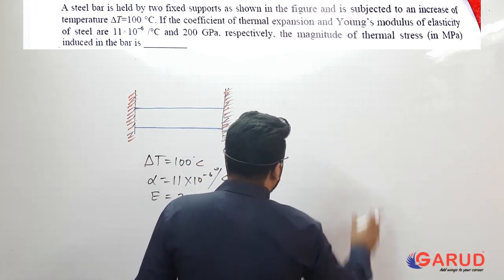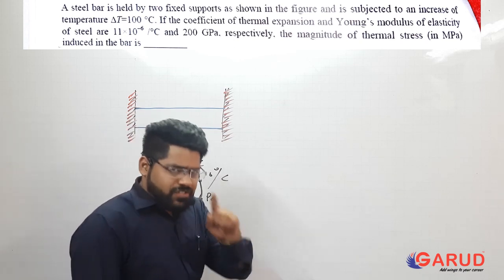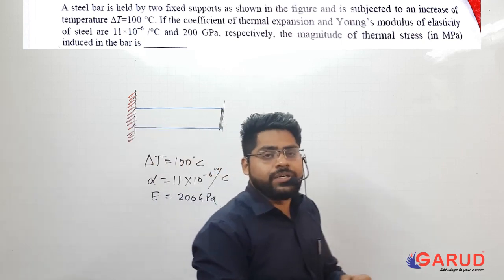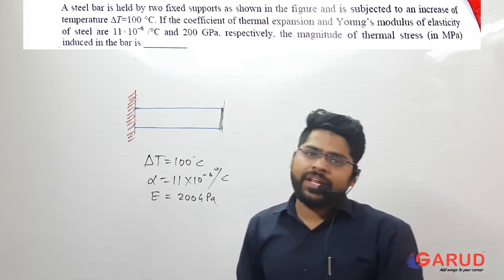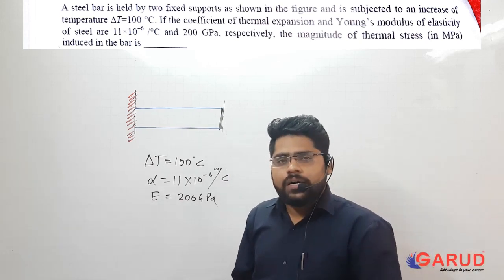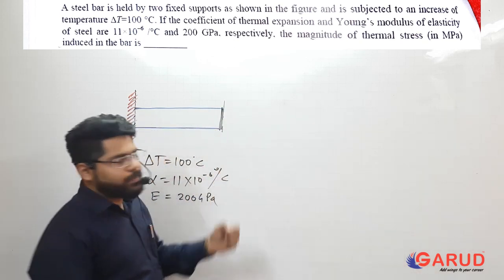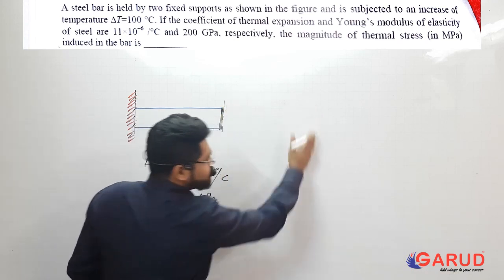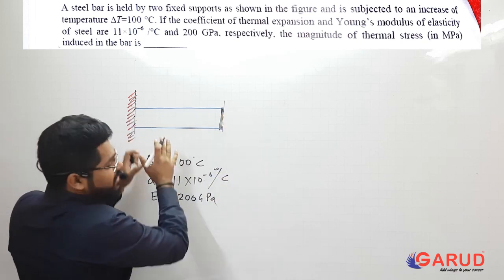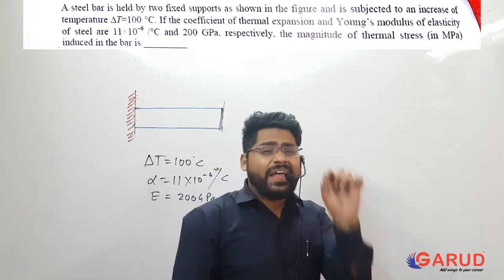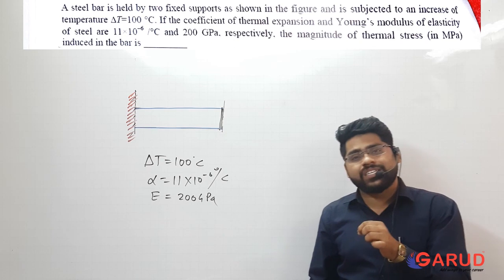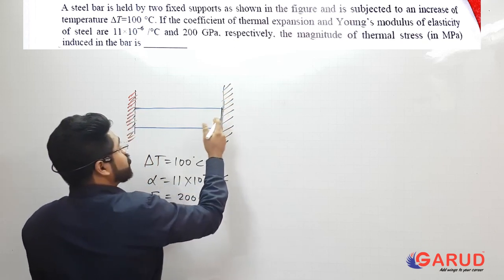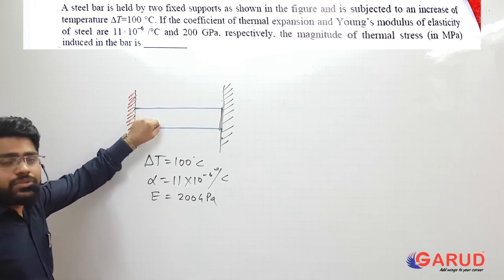If the end constraint is removed and the bar is free to expand, increasing the temperature will not induce any stress — it is free expansion with no restriction. Stress only comes when the material is restricted from expanding. In this problem, rigid walls prevent any expansion, so as soon as temperature increases, stresses are induced into the material.